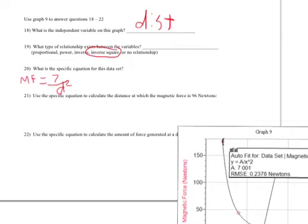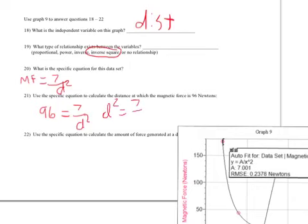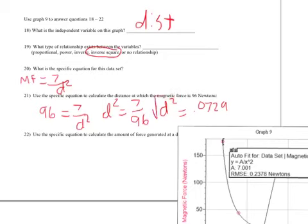Now using this specific equation to calculate distance: the magnetic force is 96, so 96 equals 7 divided by D squared. Since I'm solving for a variable in the denominator, I swap these out: D squared equals 7 over 96. Dividing that, D squared equals 0.0729. I don't want D squared, so I take the square root of both sides, giving D equals 0.27 meters.